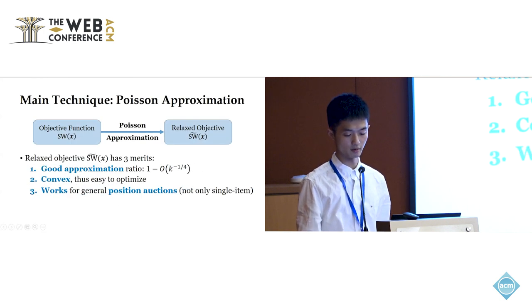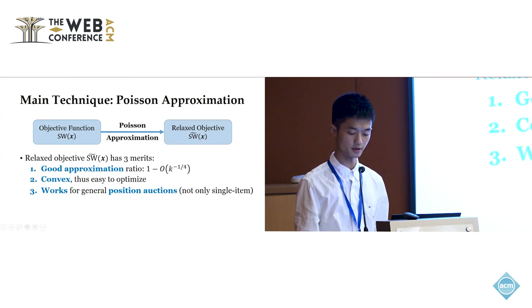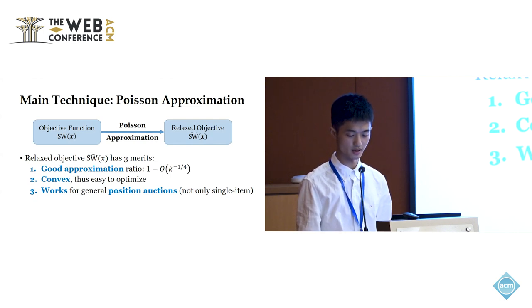The main technique of our work is called a Poisson approximation, which turns the objective function into a relaxed version. This relaxed objective is a good approximation of the original one, and it is convex. So we can run standard convex optimization algorithms to optimize it. And finally, the relaxation works for general position auctions with careful analysis.